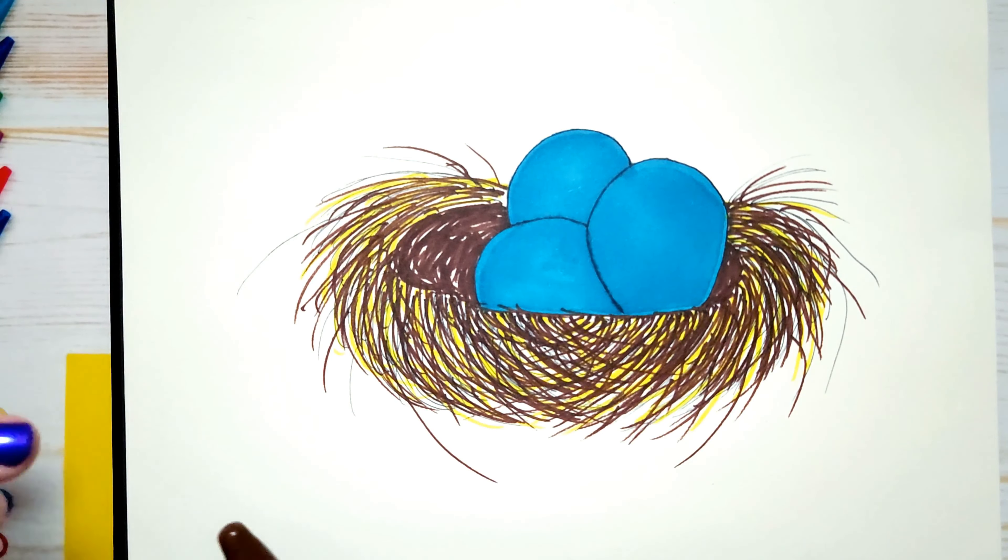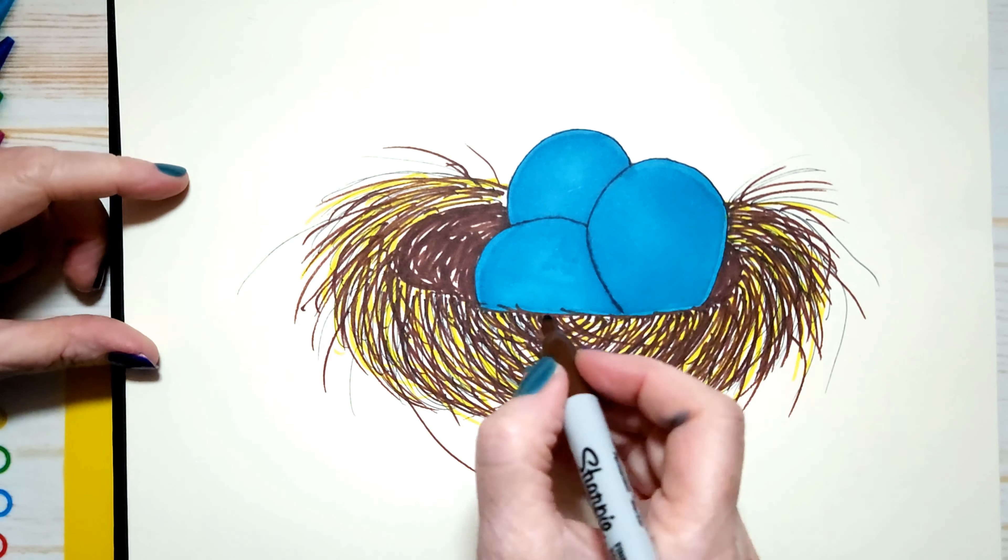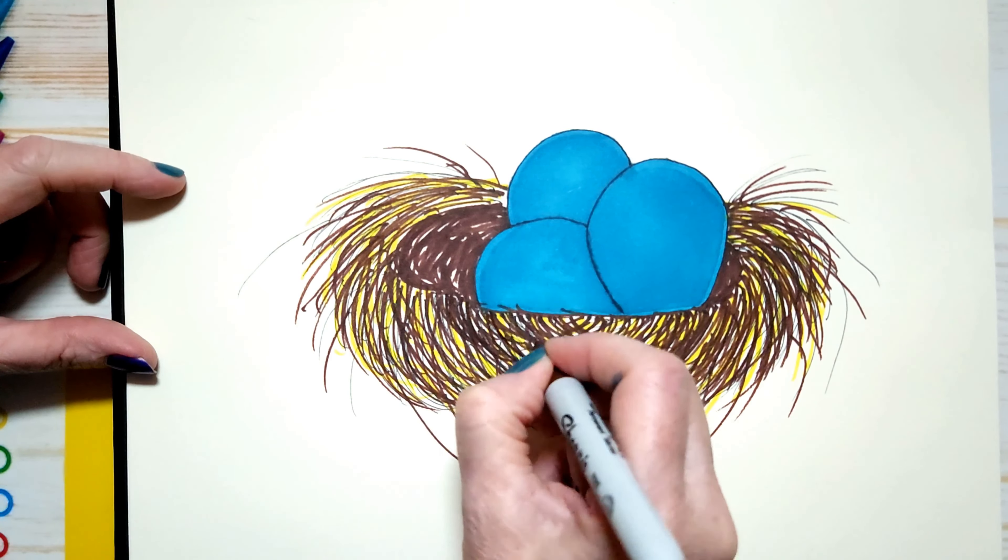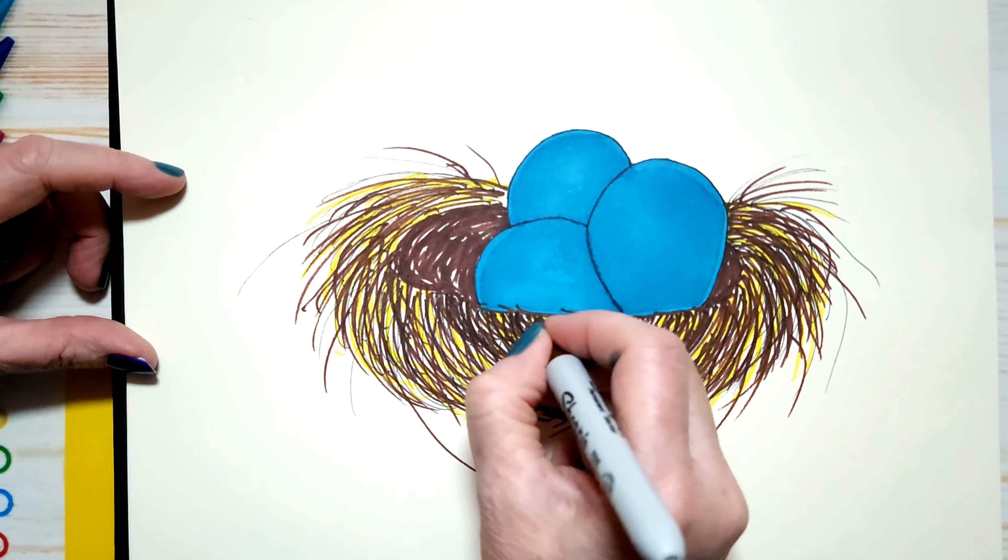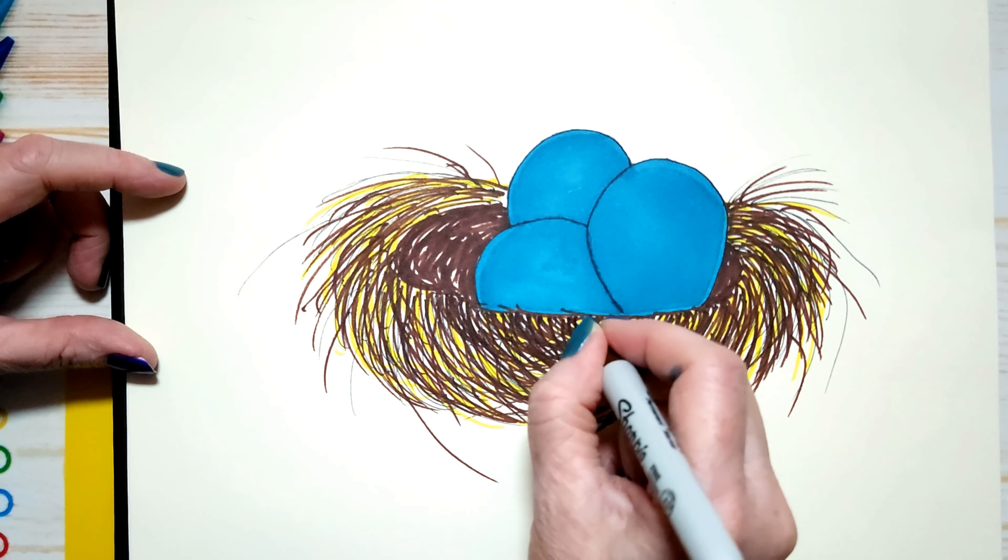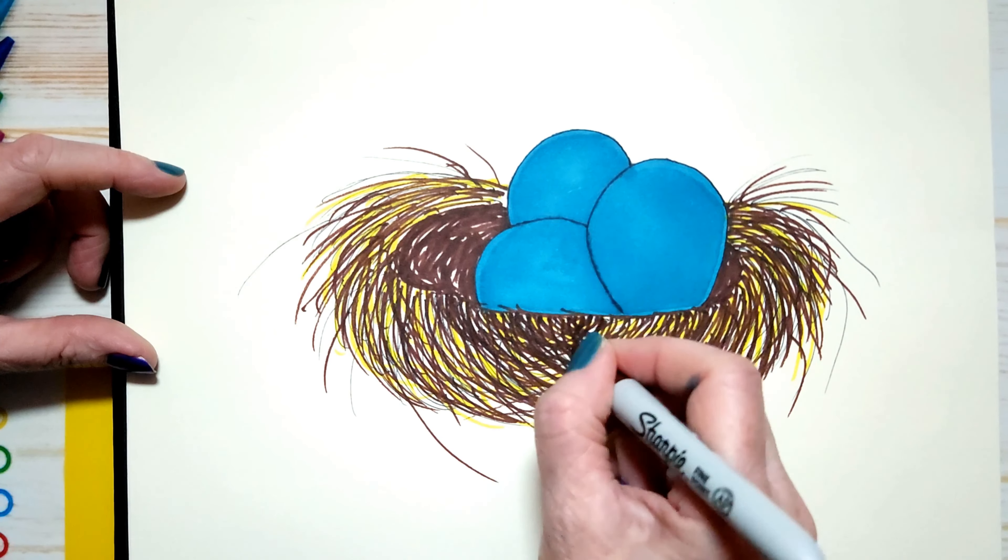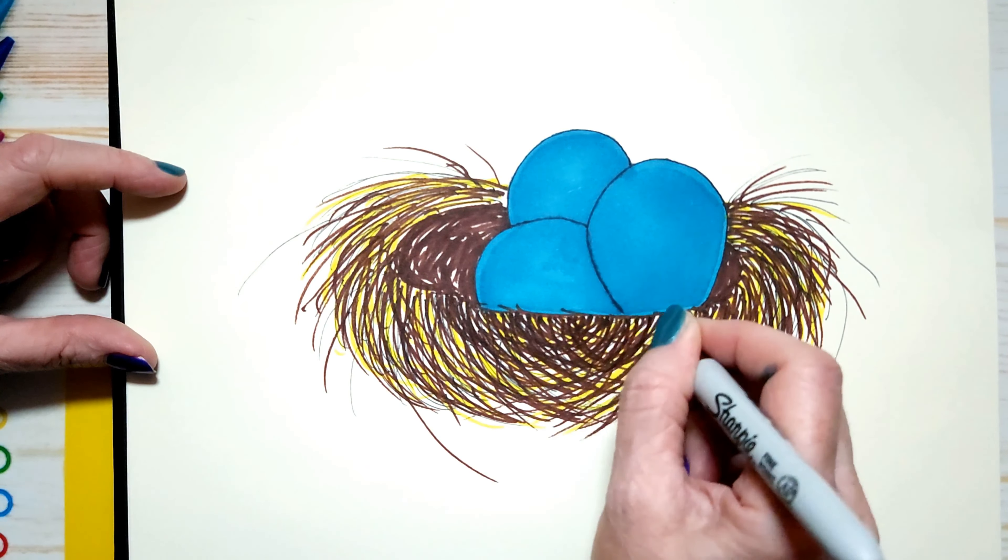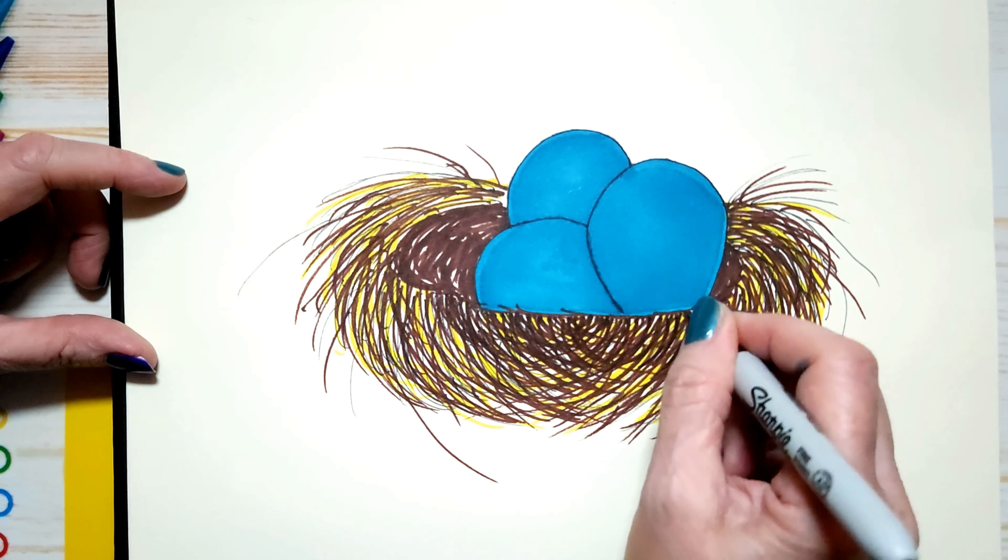I think I'm going to add a little more brown. I want it to be a little darker. But I don't want to lose my yellow, so I'm not going to cover it 100% completely. But I do want it to be a little darker.